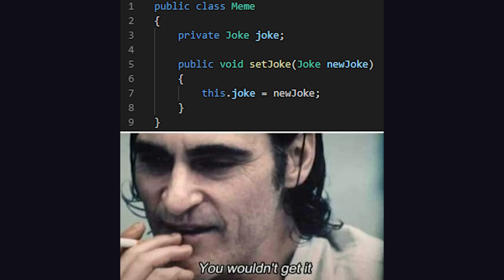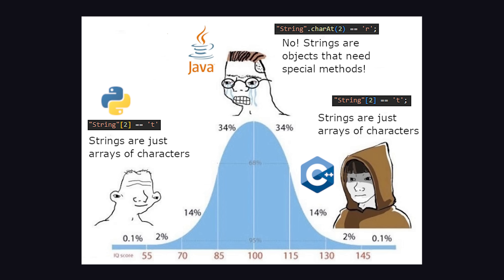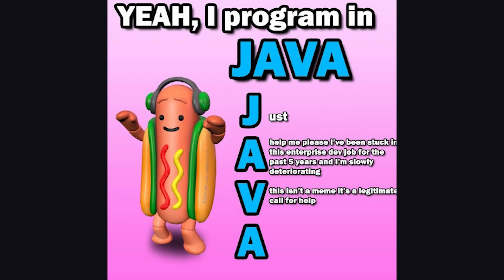This next meme is a good one, but you wouldn't get it, so I'm not even going to try to explain it. If you like Windows, you might like Java, because it loves to force you into annoying updates all the time. And as you gain more experience as a programmer, you'll eventually find out that everything doesn't need to be an object, because these objects will pile up and devour your RAM. And finally, it's important to realize that not every meme is a joke — many of them are a legitimate cry for help.